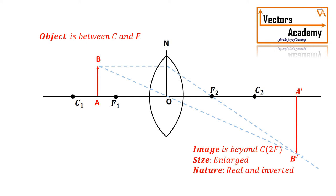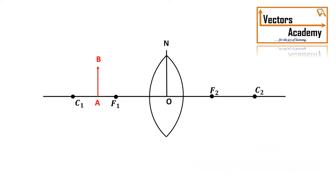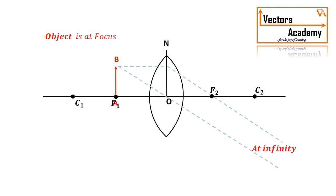If we place the object at the focal length, the rays passing through the optical center and the refracted ray passing through the focus do not meet. Hence the image is not formed, or the image can be said to be formed at infinity.